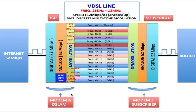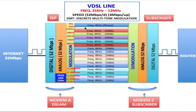This 12 megahertz is divided up into 4 kilohertz channels all the way from 0 hertz up to 12 megahertz. The very first channel, between 0 hertz and 4 kilohertz, is used for the phone — plain old telephone service, called a POTS line. Then there's a gap between 4 kilohertz and 25 kilohertz, which acts as a separation between the phone and the VDSL line to prevent interference between the two.